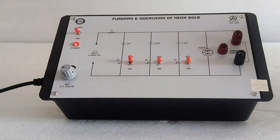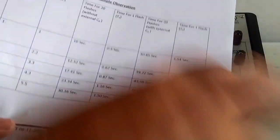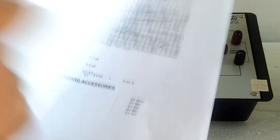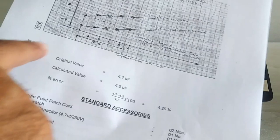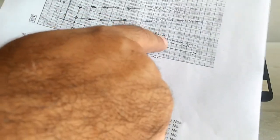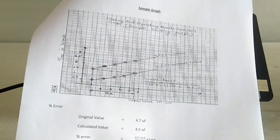to 5.5 microfarad. Here is the sample observation and here we have the graph. Here is the sample graph and we can calculate the unknown capacitance and find the percentage error with the help of this apparatus.